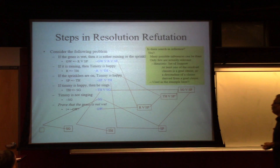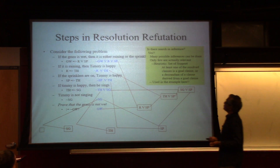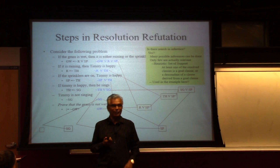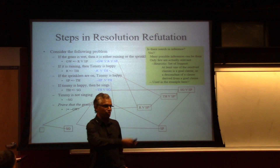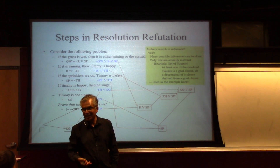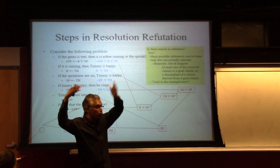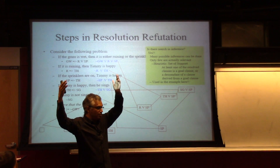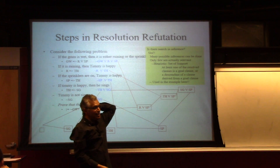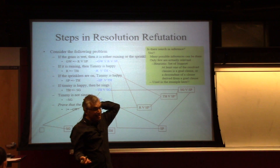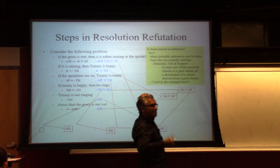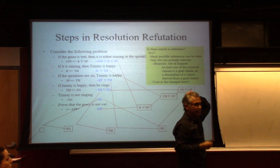Is there search in the inference? Well, if I show you a path, you would be fine. But to get that path, you must have looked at all other paths too. So there is indeed a search, and you need to make sure that you're not doing the same thing again and again.